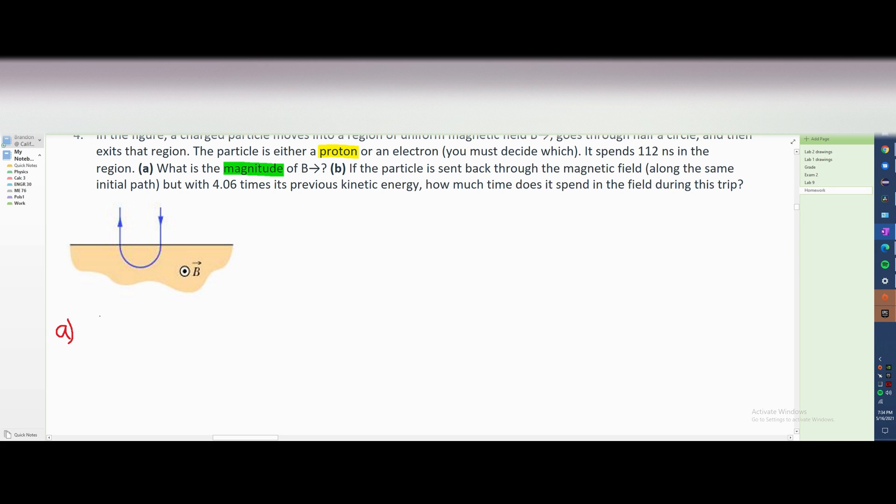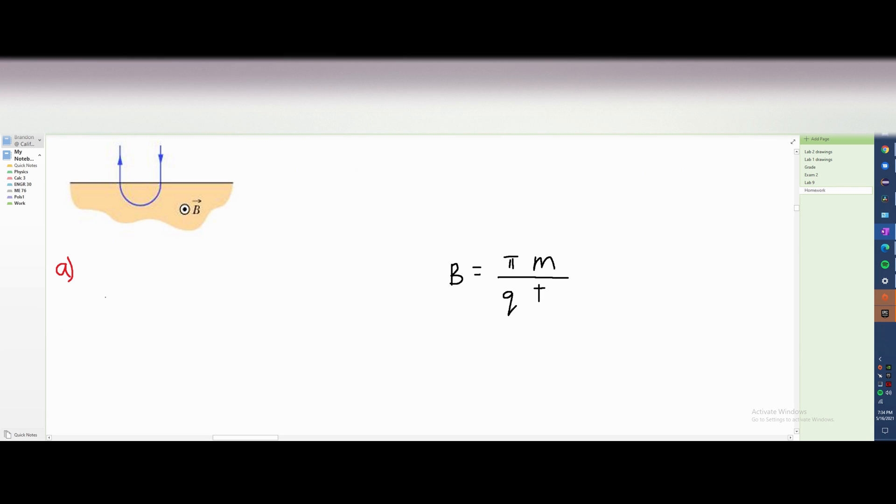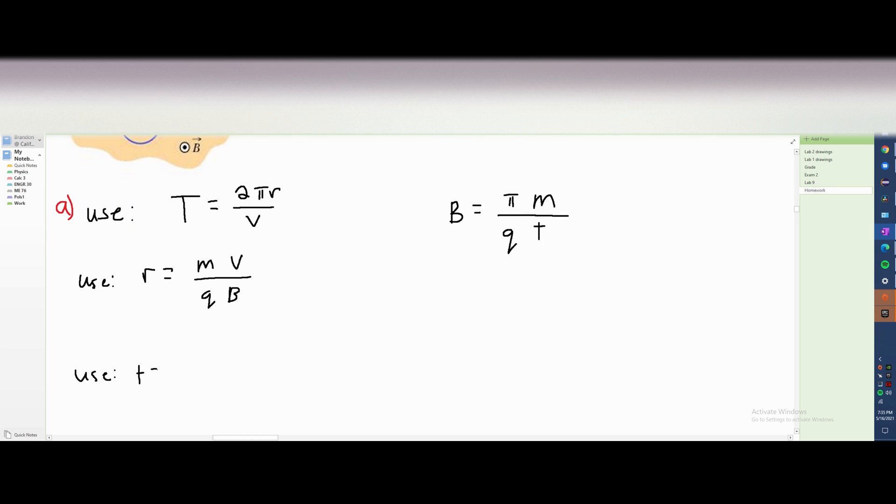To find our magnitude, we use the formula B is equal to π times mass over charge times T. If we want to see where this comes from, we can do the following where we use a T for period and that's going to be 2πR over V velocity. And we have R equaling the mass times V over the charge times B. Next, we have a T which is equal to T over 2.